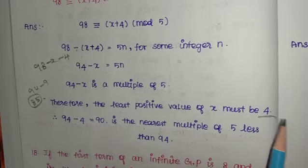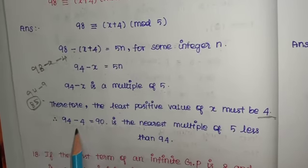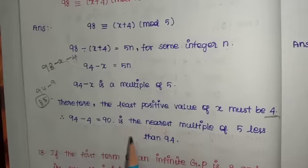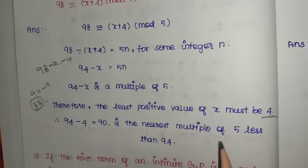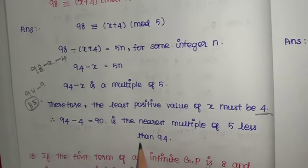Therefore 94 - 4 = 90 is the nearest multiple of 5 less than 94. Problem number 18.